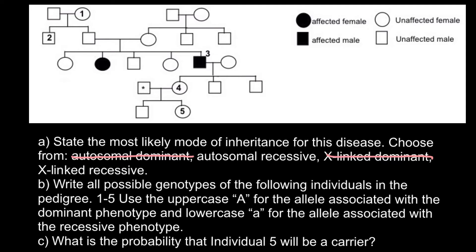Can it be X-linked recessive? If this female got this X-linked recessive allele from her father's side, her father would also have to be affected because he has only one X chromosome. And if she got this recessive allele from her mother's side, she wouldn't be affected because she would have another normal X chromosome received from her father's side — and we know the father has a normal X-linked allele. So we can cross out X-linked recessive as well.